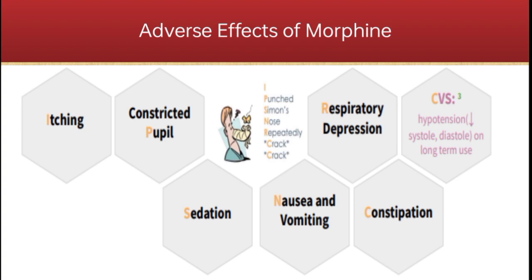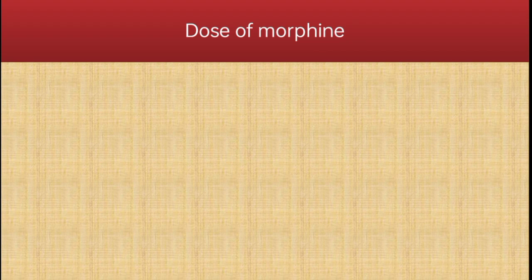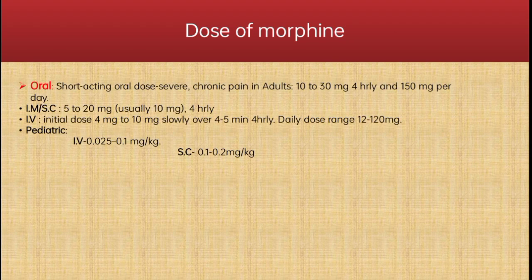Regarding the dose of morphine: it can be given orally, subcutaneously, intravenously, intramuscularly, epidurally, and intrathecally. The oral dosage is 10–30 mg per 4 hours, or 150 mg per day.